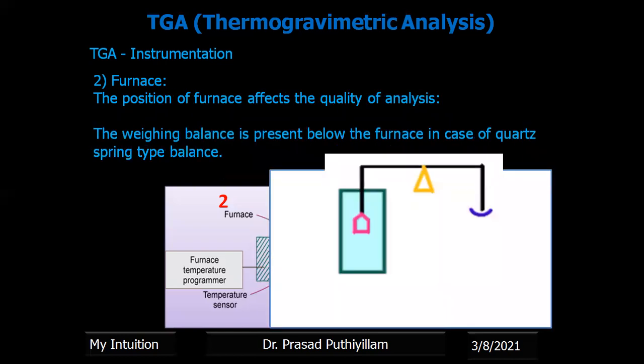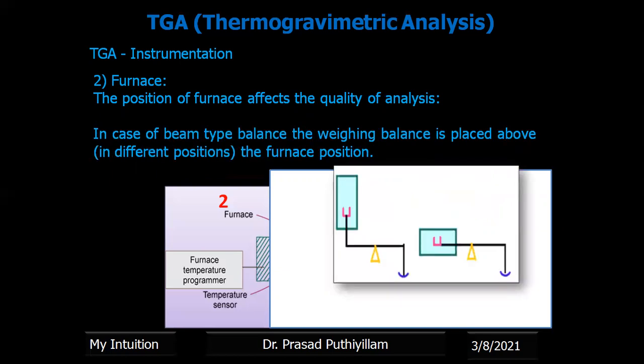The position of the furnace also affects the quality of analysis. The given image represents the spring-type balance in which the furnace is placed below the weighing balance — called a quartz spring-type balance — or even the beam-type balance, in which the weighing balance is placed above in a different position to the furnace.